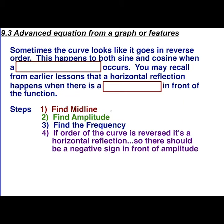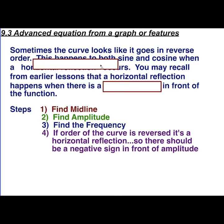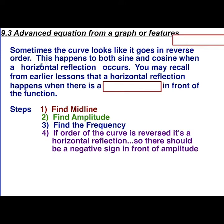Lesson 93: advanced equation from a graph or features. Sometimes when we look at these curves it looks like it's going in reverse order, and this can happen to both sine and cosine. It occurs when we have a horizontal reflection. A horizontal reflection is over the x-axis, and it makes the order of our sine or cosine curve appear reversed.